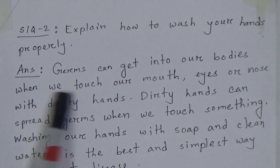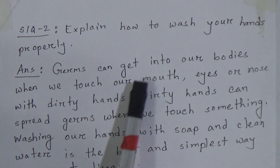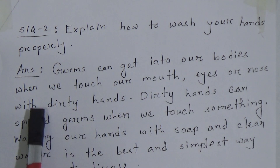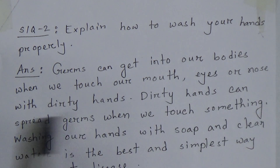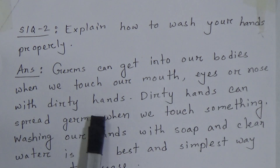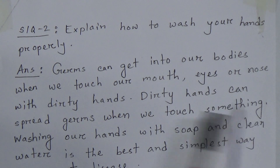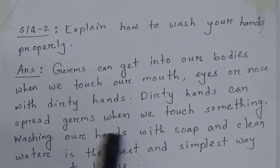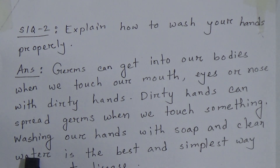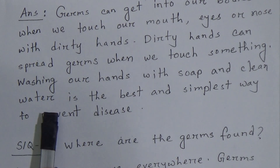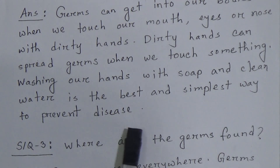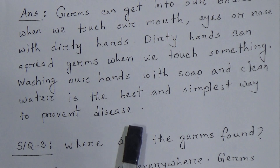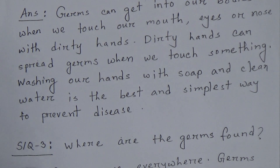Short question number two — explain how to wash your hands properly. Answer: Germs can get into our bodies when we touch our mouth, eyes, or nose with dirty hands. Dirty hands can spread germs when we touch something. Washing our hands with soap and clean water is the best and simplest way to prevent disease.